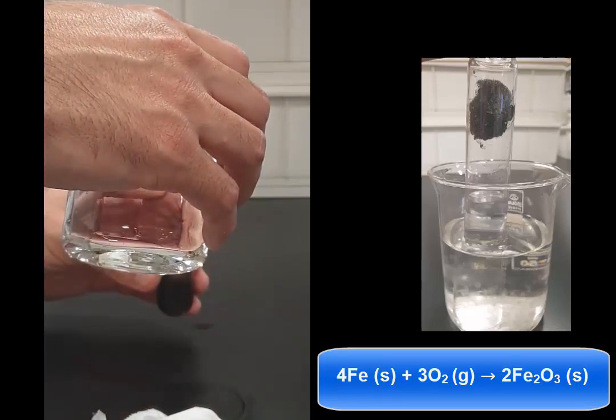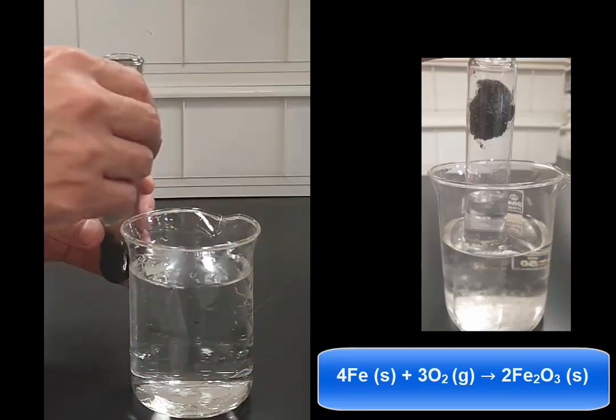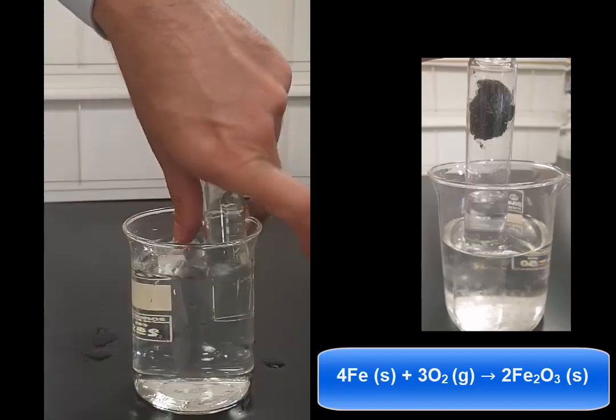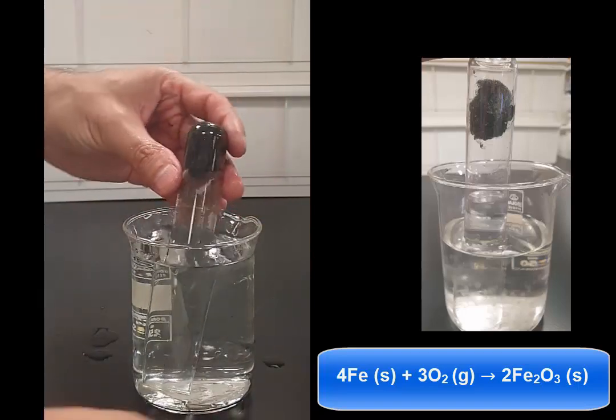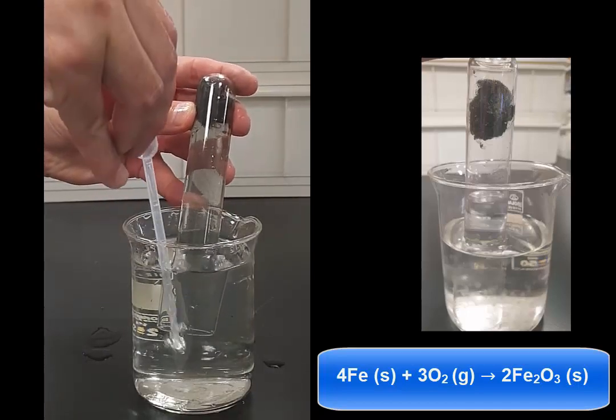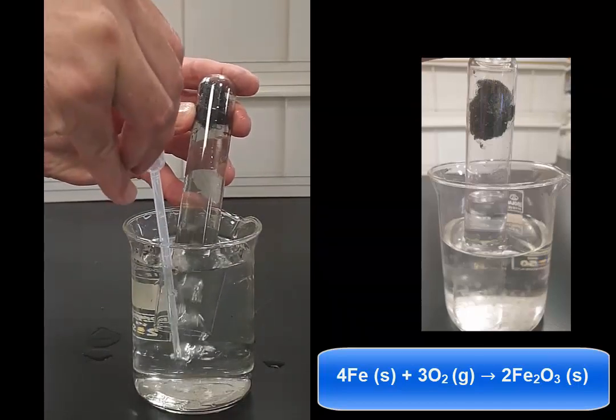First, you start off with a little bit of salt or maybe 10 mils of 0.1 molar acid to help it rust faster. You can see I filled in the test tube and now I'm just getting a pipette and making the air level at the same level as the water.